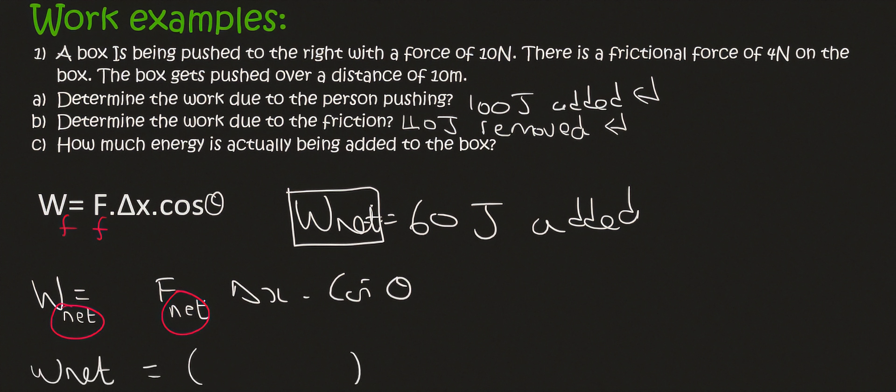So w net, meaning the overall effect, is going to be equal to f net. Now f net is going to be equal to 10, which is to the right, minus 4. Now that 10 minus 4 is 6, and is that 6 to the right or 6 to the left? Well, that's going to be 6 to the right, then the displacement is 10.